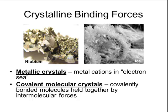This would be the same type of attractive force that holds water molecules together in a solid form called ice. So, to review, crystalline solids can be subdivided into four different kinds: ionic, covalent network, metallic, and covalent molecular.